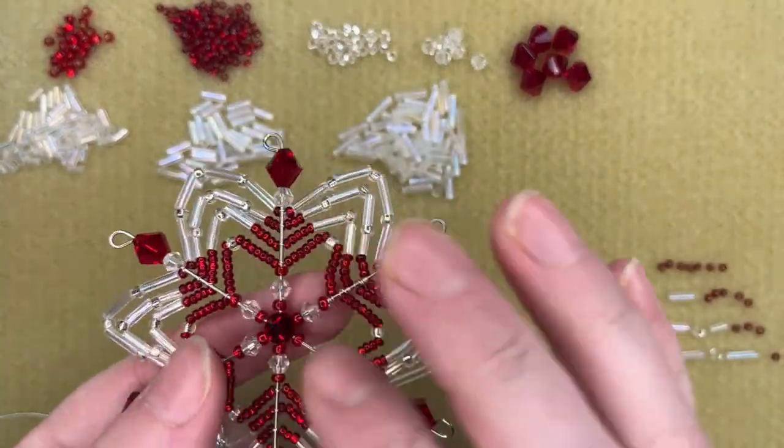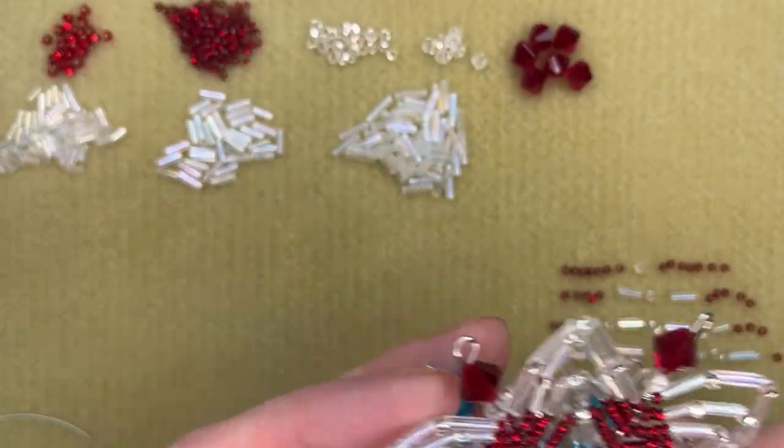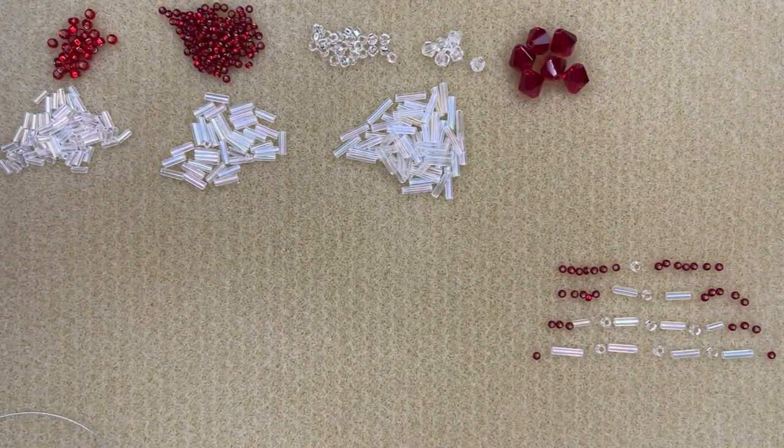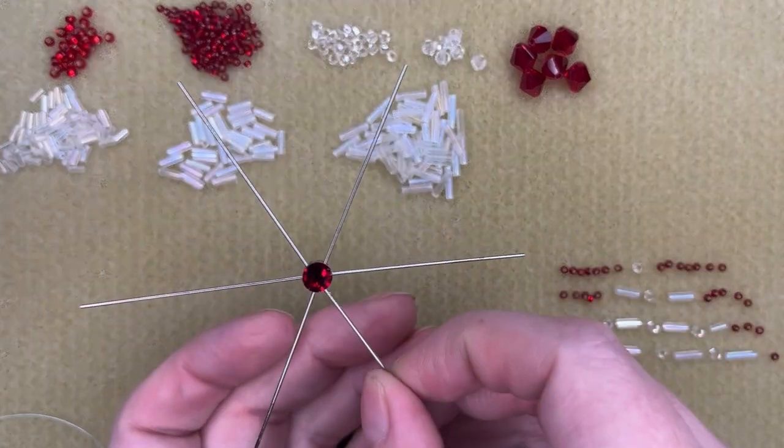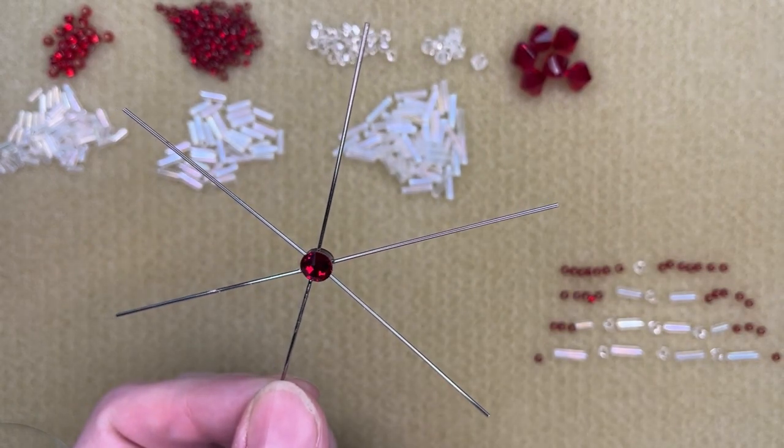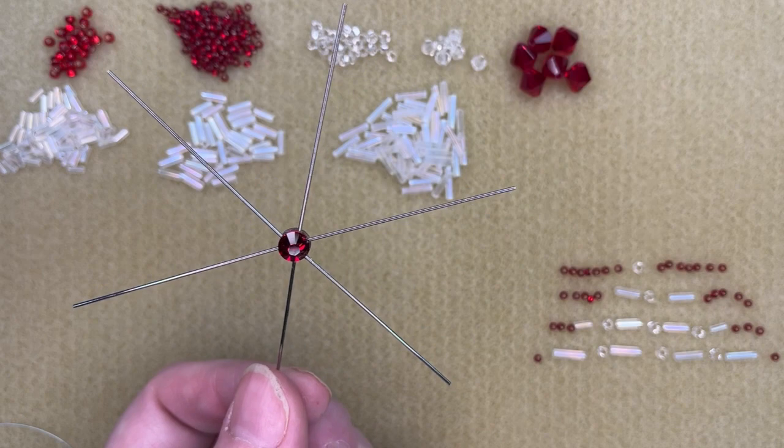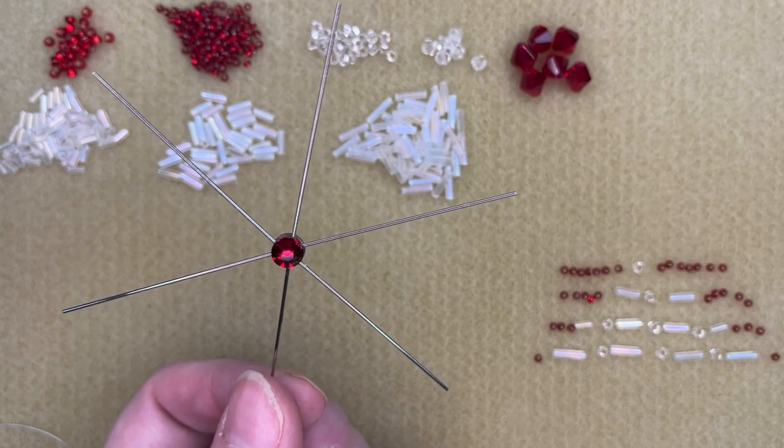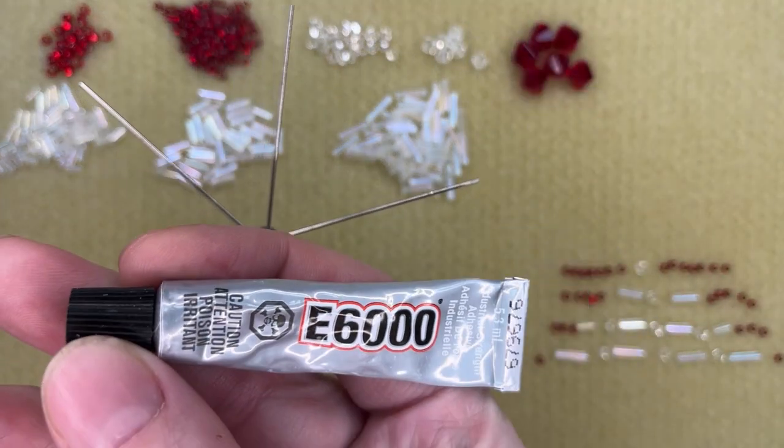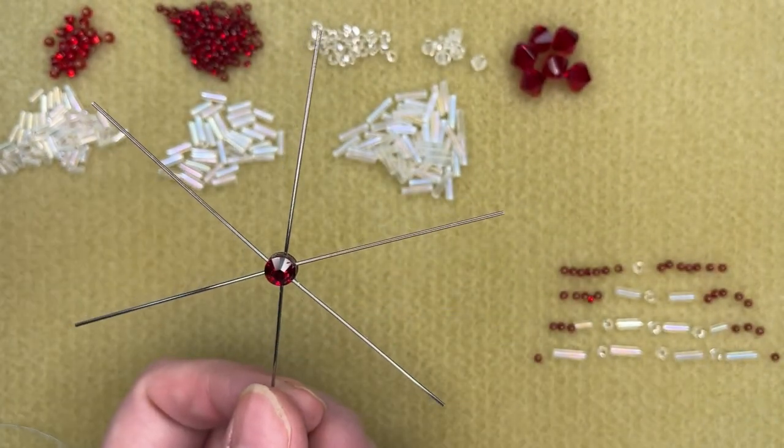We did do these up as kits and I will put the link in our description under the video here. But what I'm starting with is a snowflake frame and I've glued a size 30 crystal on either side of the center of it. So I had to do that ahead of time. I did use E6000 glue to do it, which is quite durable and will hold really well.